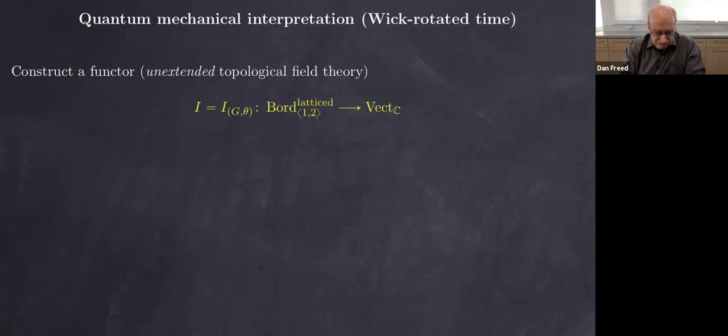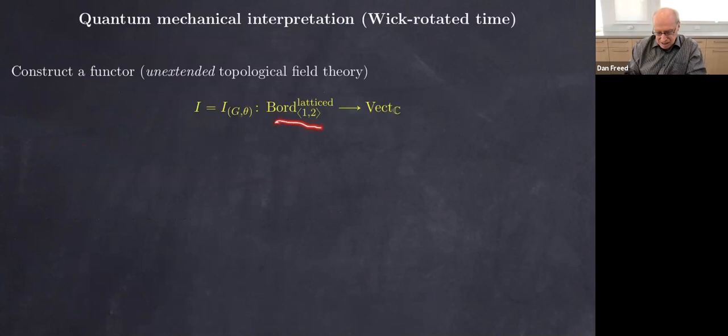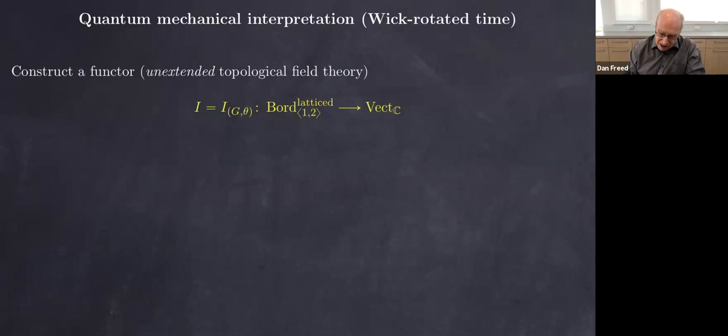Before going to the symmetry, let me give a quantum mechanical interpretation of the Ising model — this is the first step, first incarnation of putting it into the setting of topological field theory. We'll construct a functor, now for one and two manifolds — Milnor's bordism category. As in Milnor, when you can have orientation, spin structures, almost complex structures, and so on, we can have different kinds of structures on the manifold — here we're going to have a lattice.